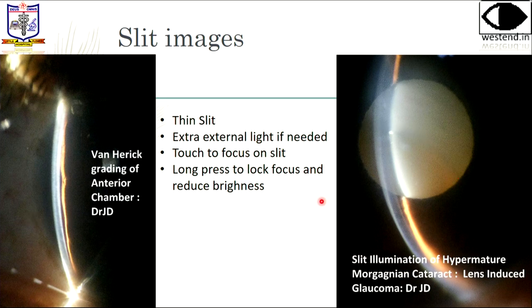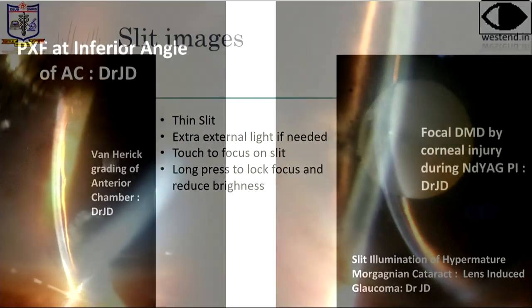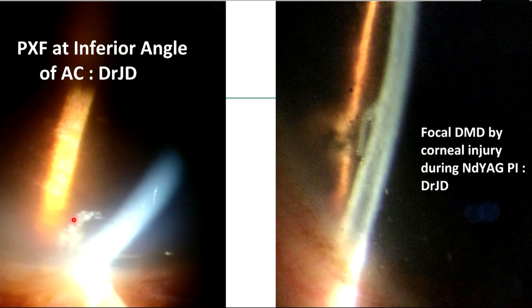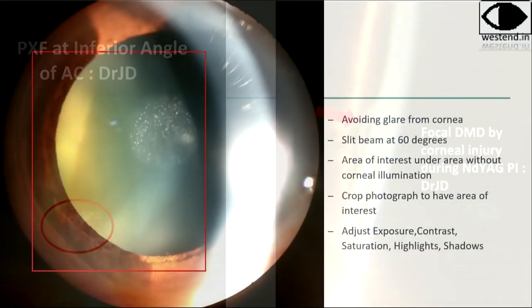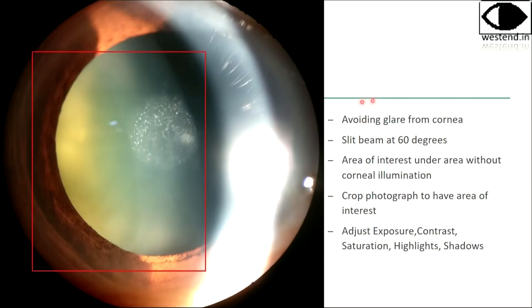Did you see this? This is a sunken nucleus. This is pseudo-exfoliation in the angle — this is a slit image, not a gonioscope image. This is a focal Descemet's membrane detachment at the point of laser PI. This could not be taken by a regular slit lamp camera; it had to be touch-focused and brightness-adjusted. The phone gave better photos here. If you take a photo like this and forget to crop, you can crop it later — you don't need the glare unless you're going for a lens flare effect.